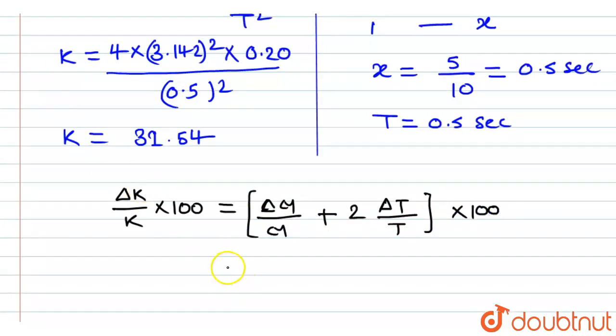Now, putting appropriate values here, the value of ΔM that is the least count in the measurement of mass—as the value of mass is 0.20 kg, the least value that can be measured is 0.01 divided by 0.20.